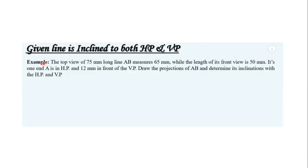The top view of 75 mm long line AB measures 65 mm while the length of its front view is 50 mm. Its one end A is in HP and 12 mm in front of the vertical plane. Draw the projections of AB and determine its inclination with HP and VP.